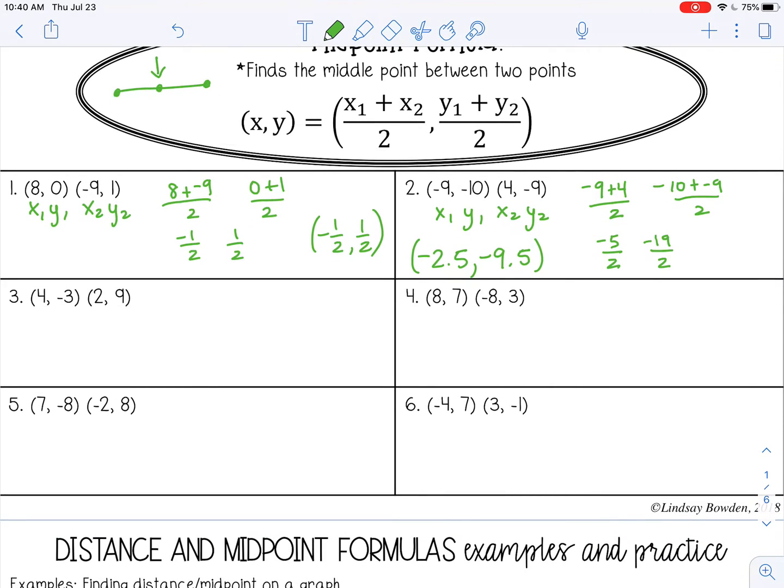Let's try one more. So remember, I'm just adding the x coordinates and dividing by 2, adding the y coordinates and dividing by 2. So that would be 6 over 2, which is 3. If it reduces, always reduce. And then negative 3 plus 9, that's 6 over 2, so again, 3. So my answer would be 3, 3.